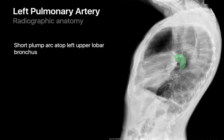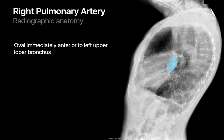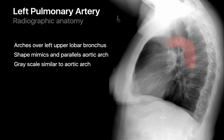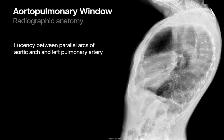On a lateral chest radiograph, the left pulmonary artery is visible as a short plump arc sitting on top of the black circle of the left upper lobe bronchus, while the right pulmonary artery appears as an oval immediately anterior to it. Their shadows are confluent, forming what appears as a single fat horseshoe atop that black circle. The left pulmonary artery also mimics and parallels the aortic arch, which helps identify the AP window — the lucent space between these two structures.